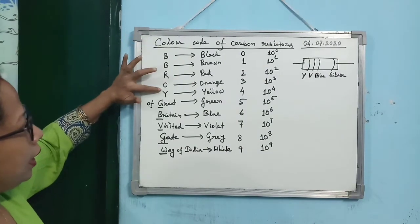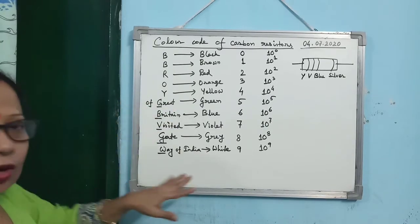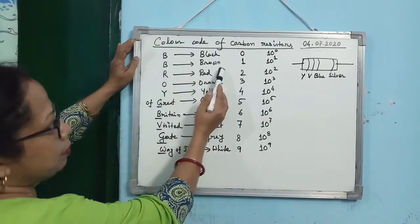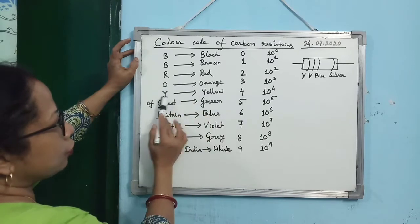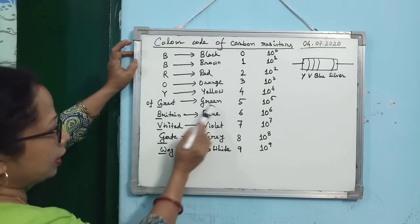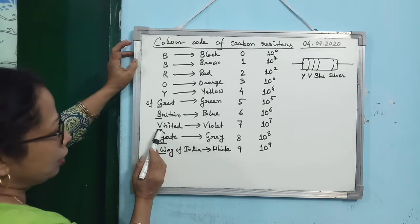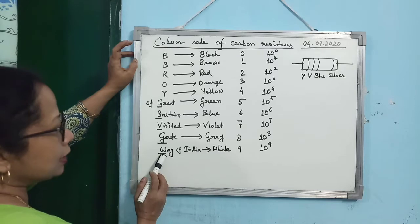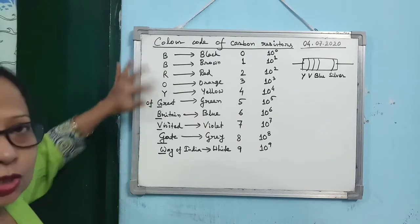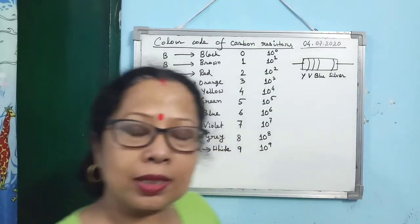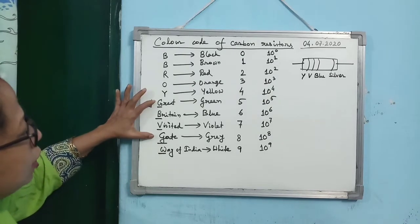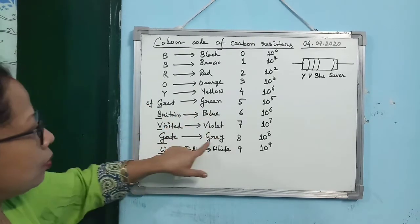The color code mnemonic is: B B Roy of Great Britain visited Gateway of India. The first B is black, second B is brown, R is red, O is orange, Y is yellow, G (of Great) is green, B is blue, V is violet, G is gray, and W is white. Note there are three B's — black, brown, and blue — and two G's — the first G is green and the second G is gray.